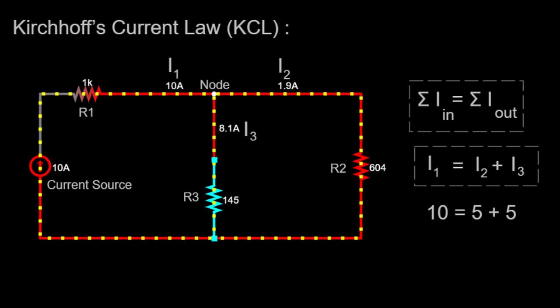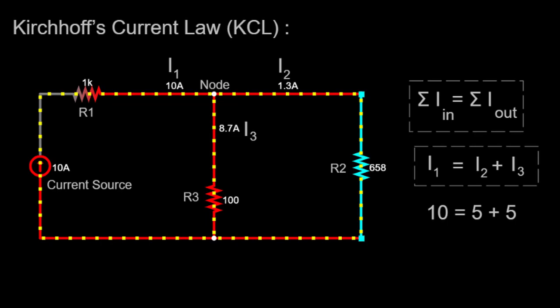By demonstrating this law using our circuit simulator, we have observed the relationship between currents I1, I2, and I3, and how they are affected by changes in resistance. The sum of currents I2 and I3 always equals the current I1, validating the application of Kirchhoff's Current Law.